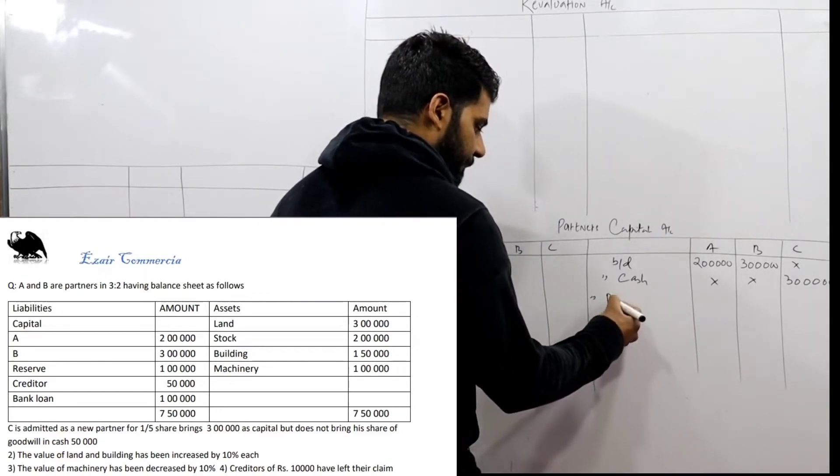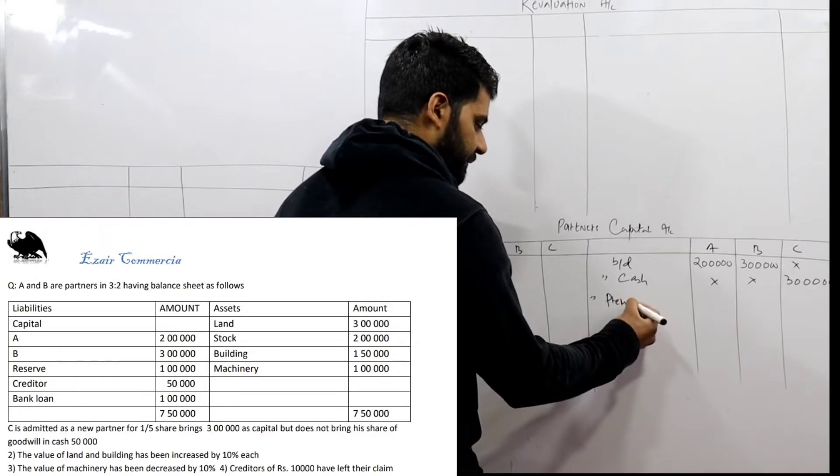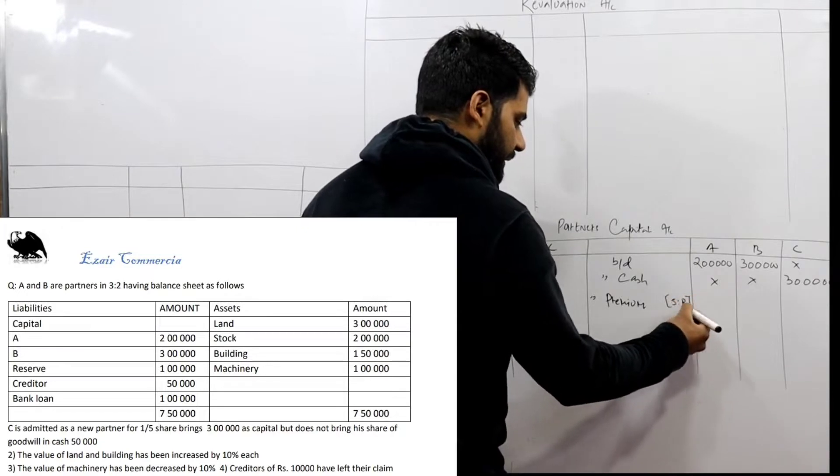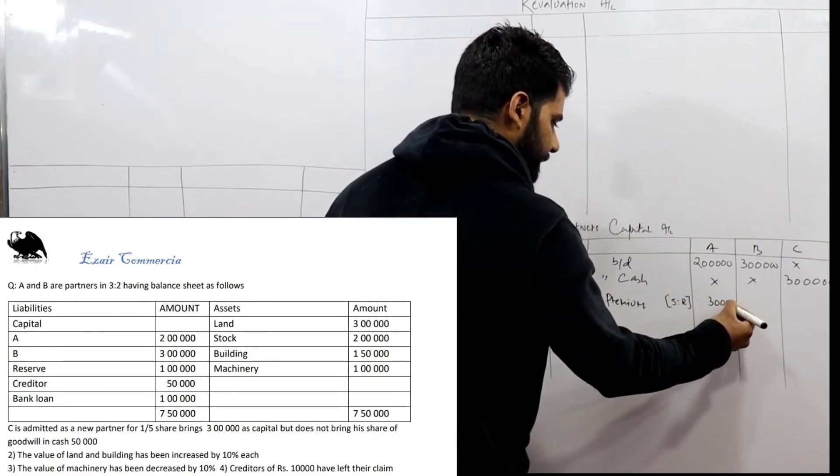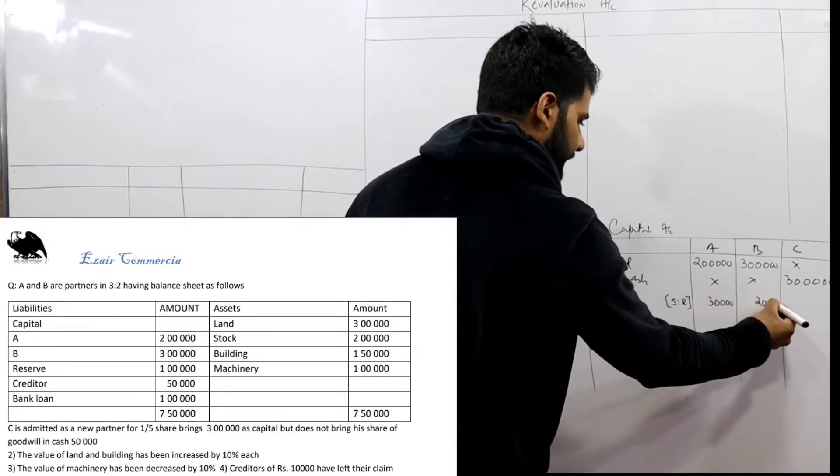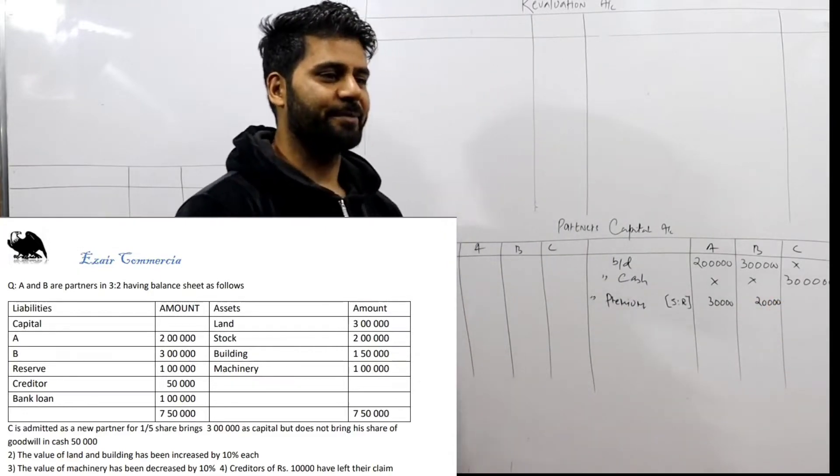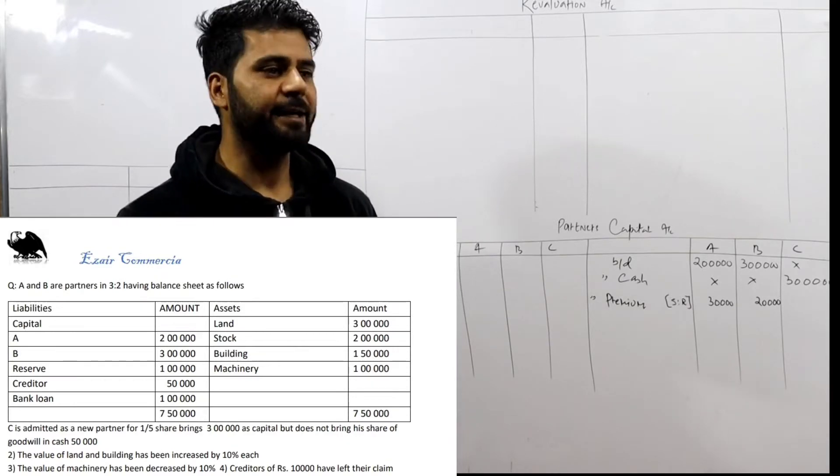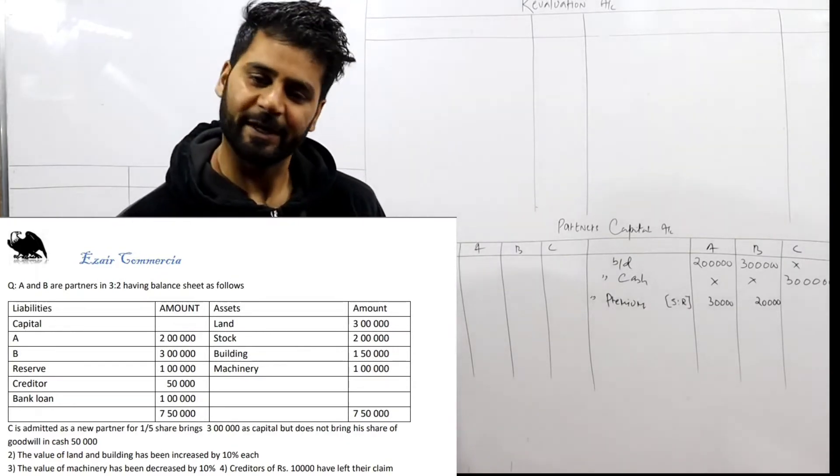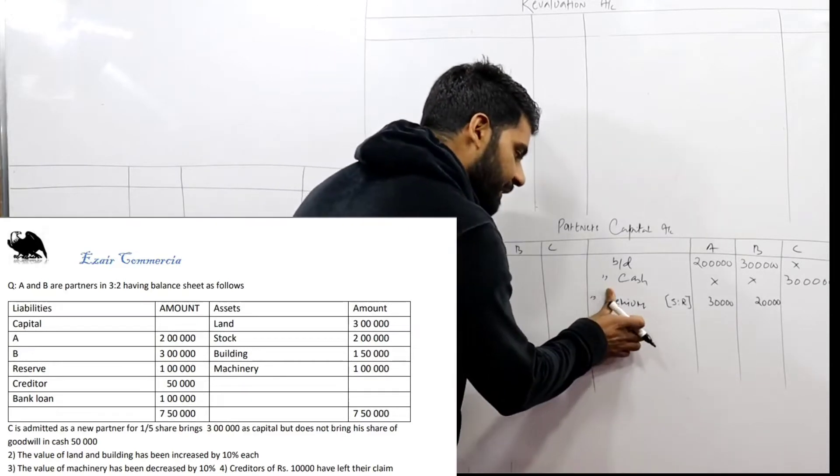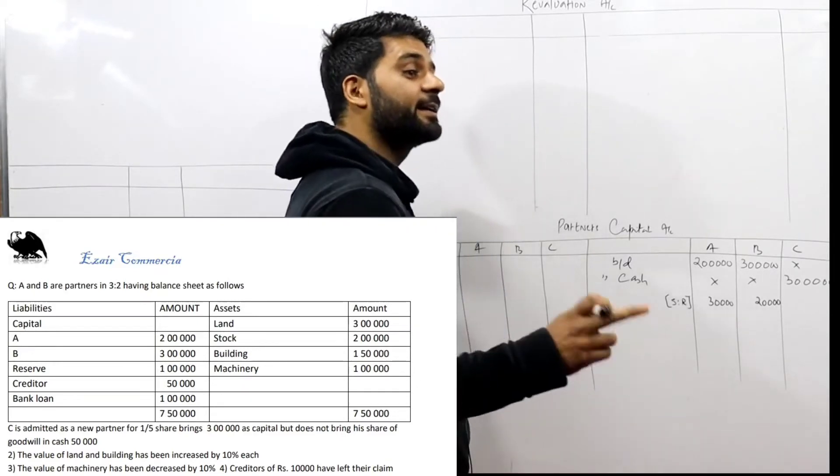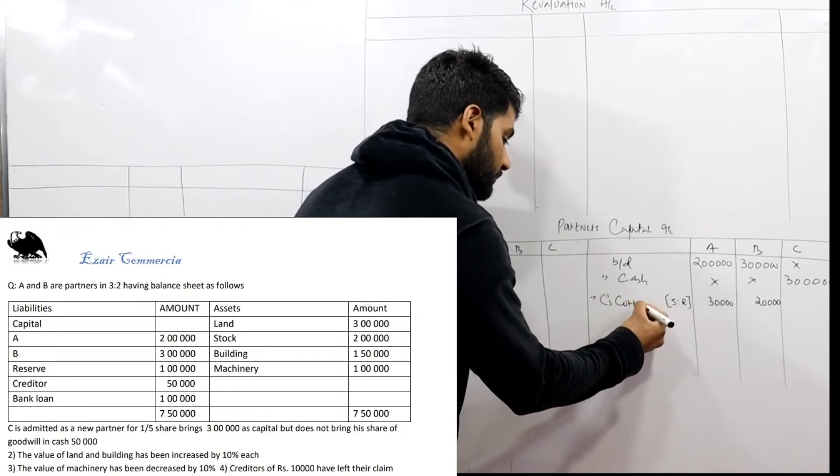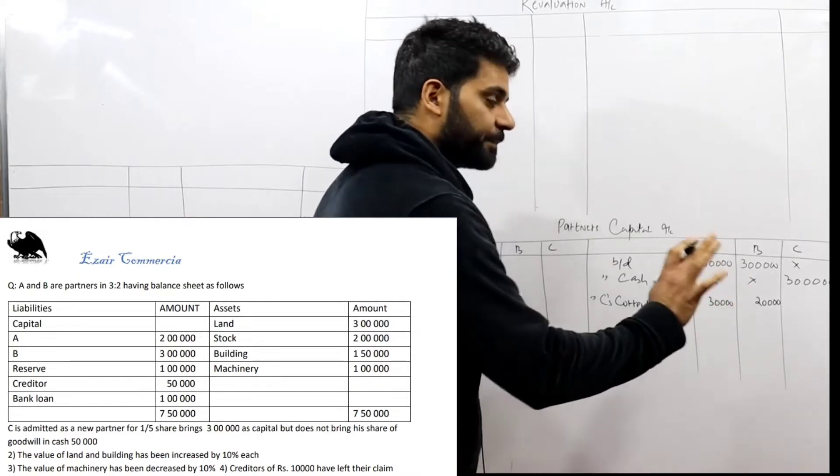We would write by premium as per sacrificing ratio. This one gets 30, this one gets 20. But my dear, the question says he does not bring premium. If he doesn't bring premium, then what do we do? We deduct it from his current account. So here we will write C's current account.